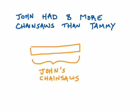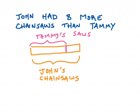The next thing I'm going to think about is Tammy. Tammy has some chainsaws too, and I don't know how many Tammy has either. But from the sentence, if John had eight more chainsaws, Tammy had less than that. So I'm going to separate this box representing John's chainsaws into a smaller piece that represents Tammy's, because I know Tammy has fewer. Then I've got this information — eight more — that I'd like to work into the bar diagram, and I'm going to represent the difference between their saws, this space right here, with the number eight.